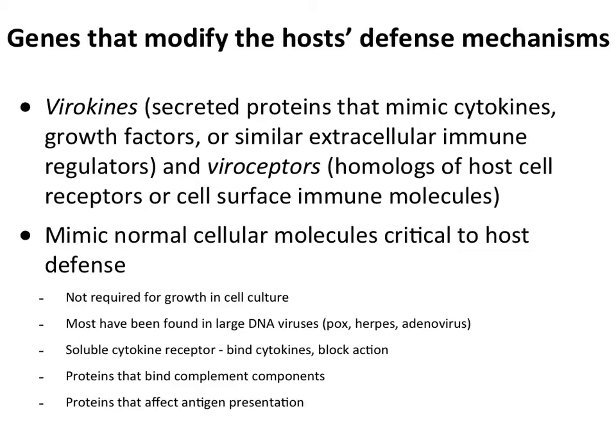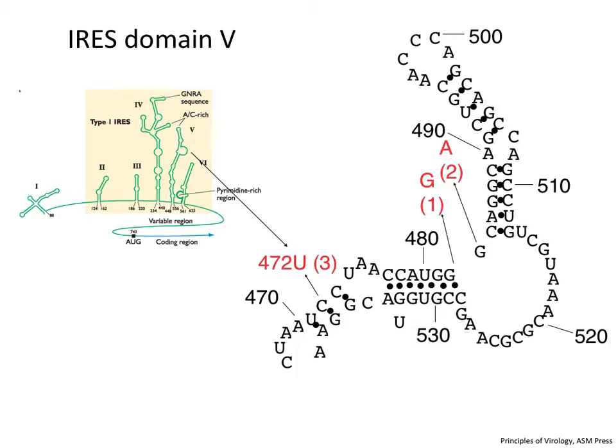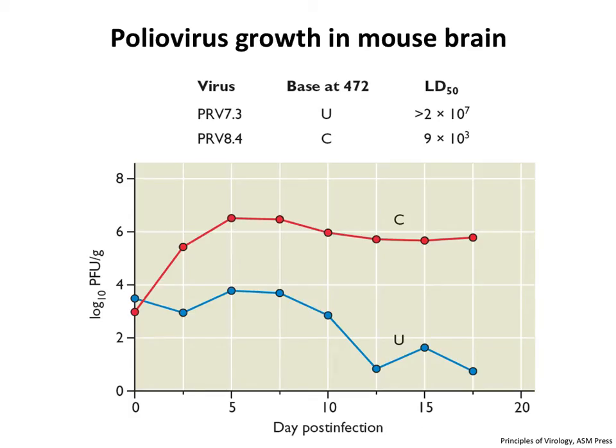A student question clarifies that the type III Sabin strain has a U instead of a C at the critical position. There appears to be a mismatch in the slide labeling, but each of the three vaccine strains has a single base change at an equivalent position in stem loop 5, and the experiment shown demonstrates how changing that one base affects virulence in the type III strain.